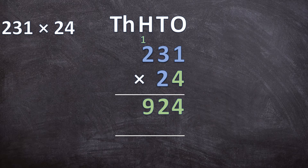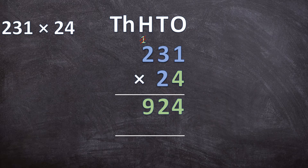Now we're going to multiply the 20 with the 231. Before we do that, two things to remember: first, cancel that 1 we wrote above the 2 because we are finished with it. Second, we are multiplying with 20 and not with 2 — 20 is in the tens place value. So before we start multiplying the digits, we write a zero in the ones place of our answer line to make sure our answer is 20 times 231, not 2 times 231.